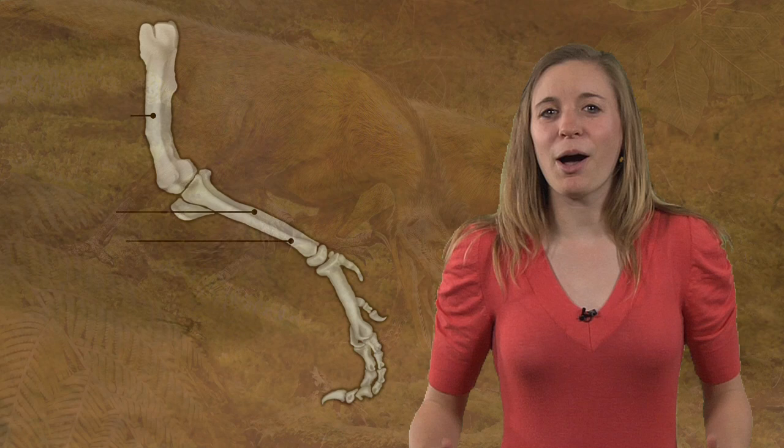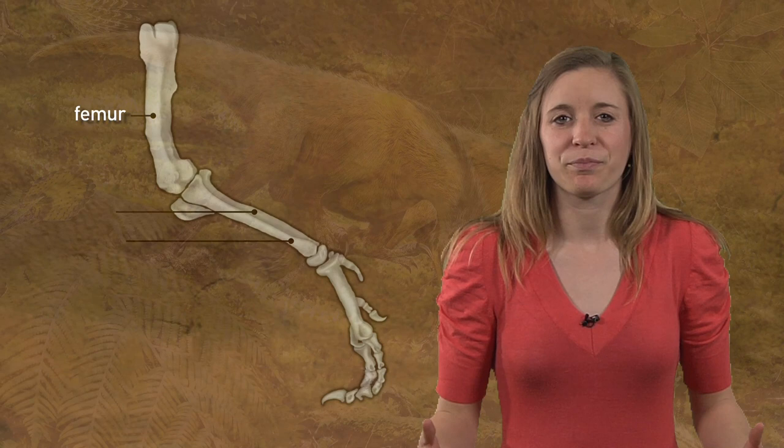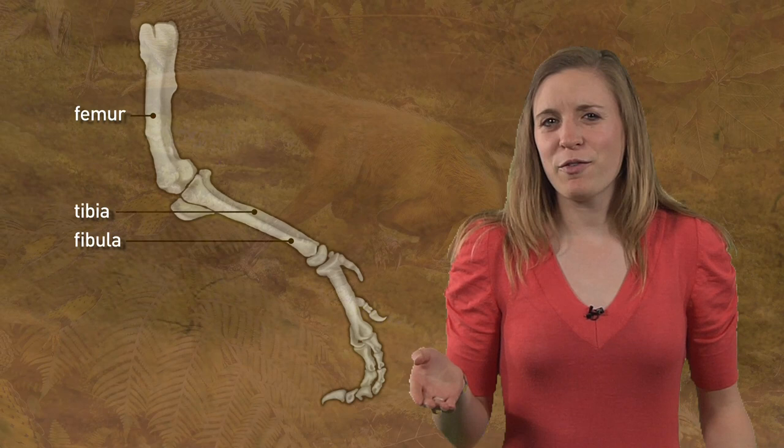The upper leg bone of Tyrannosaurus rex — which is the same one in my leg — is called a femur. The two lower leg bones are known as the tibia and fibula. If you've ever broken your leg, most likely you broke your fibula.